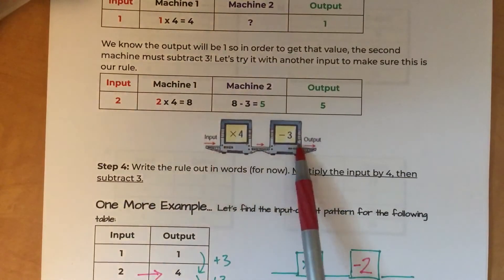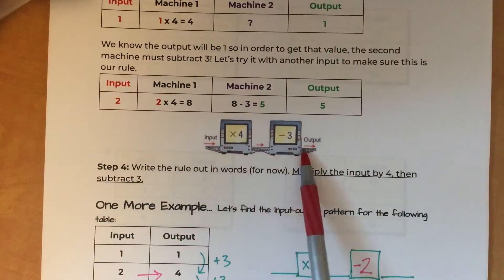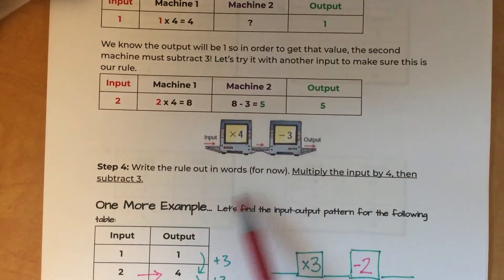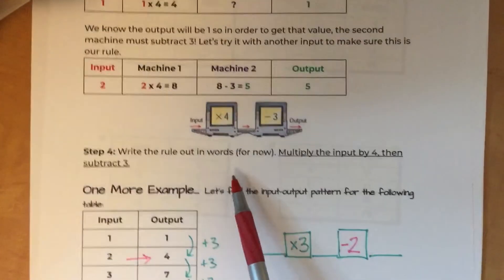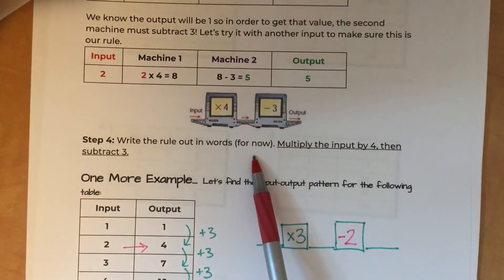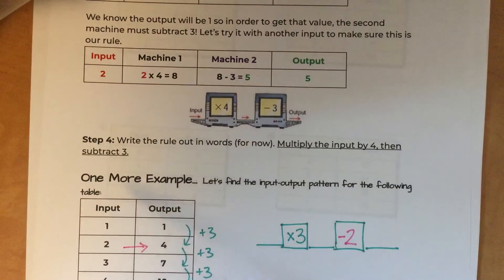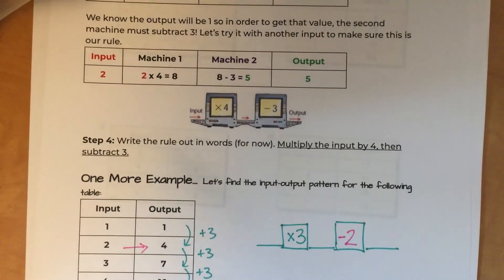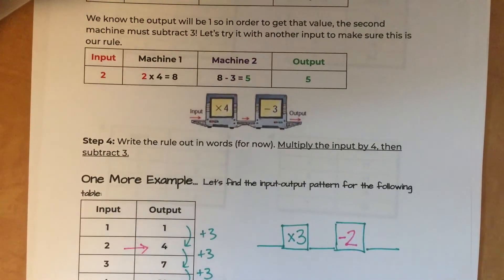Once we know what both machines are, we write the rule out in words. The rule is: multiply the input by four, then subtract three.